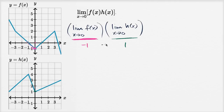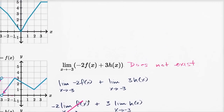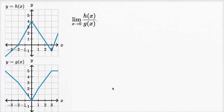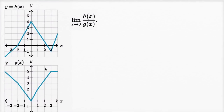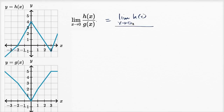So negative one times one is going to be equal to negative one. Let's do one more. These are both continuous functions. We have the limit as x approaches zero of h of x over g of x. Using our limit properties, this is going to be the same thing as the limit of h of x as x approaches zero, over the limit of g of x as x approaches zero.